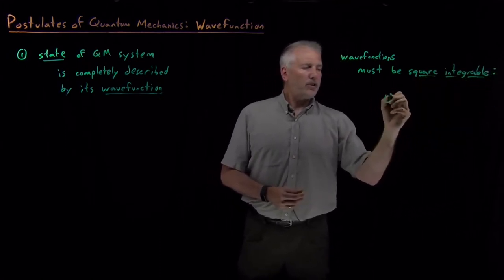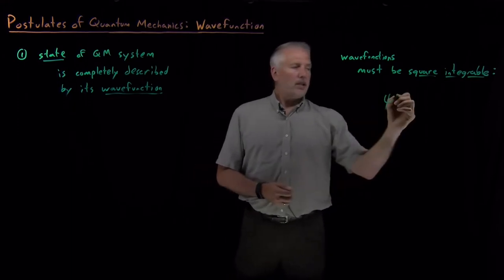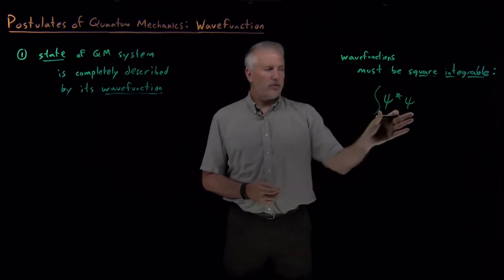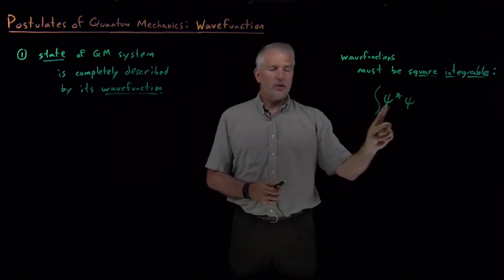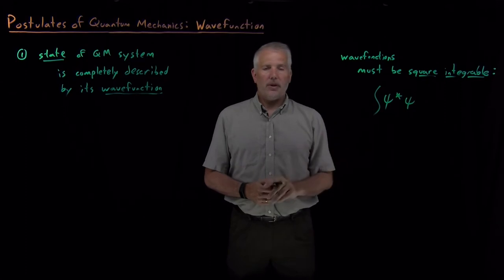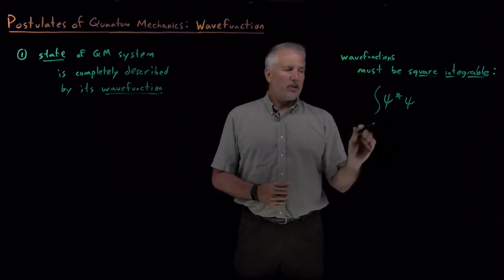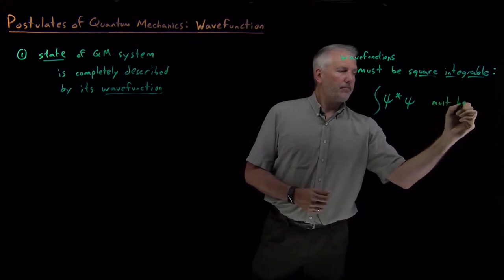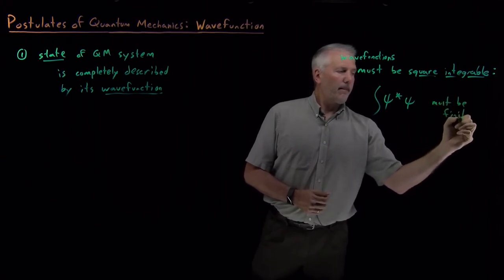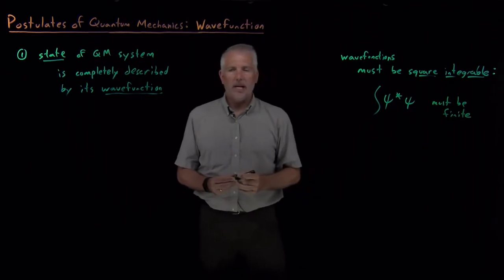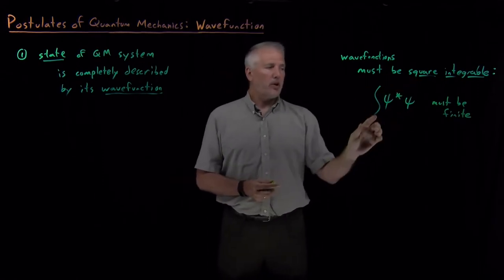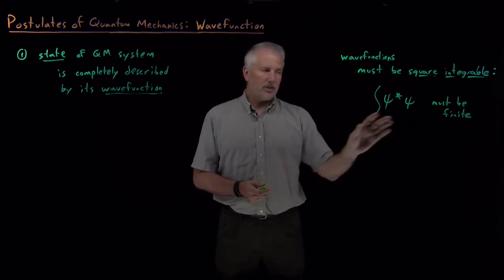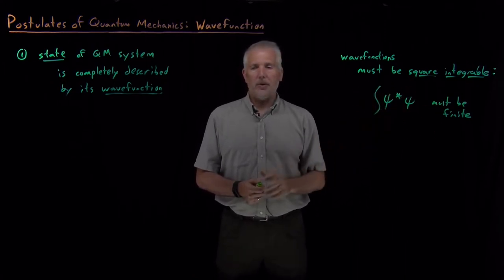If I have a wave function ψ, this integral that we've seen several times before—the wave function multiplied by its complex conjugate, integrated—must be finite. For something to be an actual bona fide wave function, its square, in this sense integrated, has to be a finite number. That's to guarantee we can normalize the wave function.